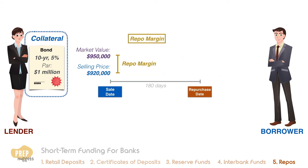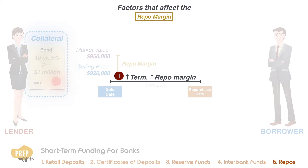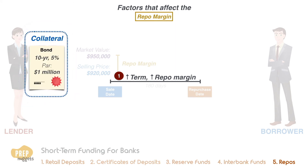Let's examine some of the factors that affect the repo margin. Similar to the repo rate, the repo margin is affected by the length of the repurchase agreement — the longer the term, the higher the repo margin. Also, the quality of the collateral is important: the higher the quality of the collateral, the lower the repo margin.